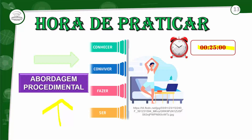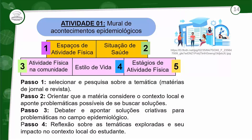Como é a proposta do mural? O aluno vai construir um mural. Nesse mural, ele vai poder escolher se vai fazer de várias temáticas ou de uma só. As temáticas sugeridas são: espaços de atividade física na comunidade, situação de saúde — aí vem Covid-19, dengue, malária, doenças crônicas, depressão, síndrome do pânico, doenças mentais que a pandemia potencializou — atividade física na comunidade, estilo de vida e estágio de comportamento.